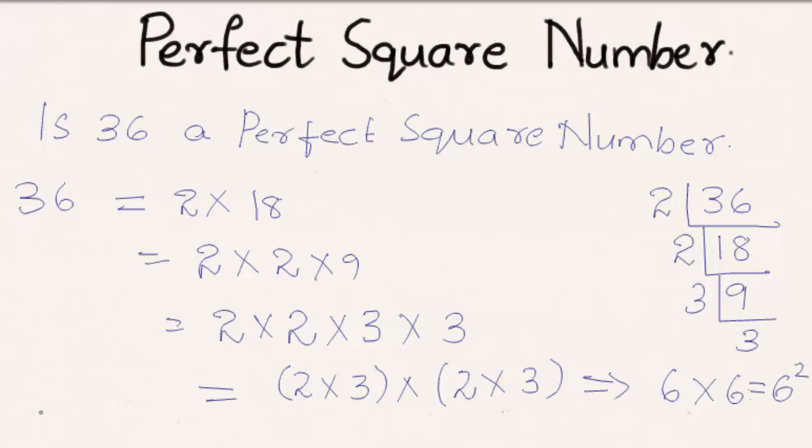So here we can see that square root of 36 is equal to 6. So the number 36 is a perfect square number, as it can be written as the product of two equal factors here.